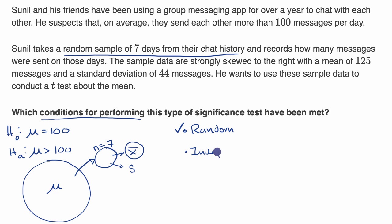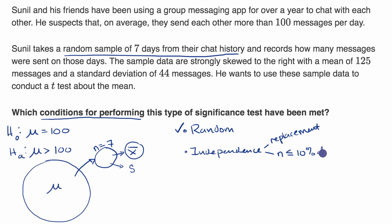The next condition is sometimes known as the independence condition — that the individual observations in our sample are roughly independent. One way they would be independent for sure is if Sunil is sampling with replacement. They don't say that, but another way to feel it's roughly independent is if your sample size is less than or equal to 10% of the population. In this situation, he took a sample size of seven, and the population of days is over 365, since they've been using the app for over a year. Seven is for sure less than or equal to 10% of 365, which would be 36.5. So we meet this condition, which allows us to meet the independence condition.